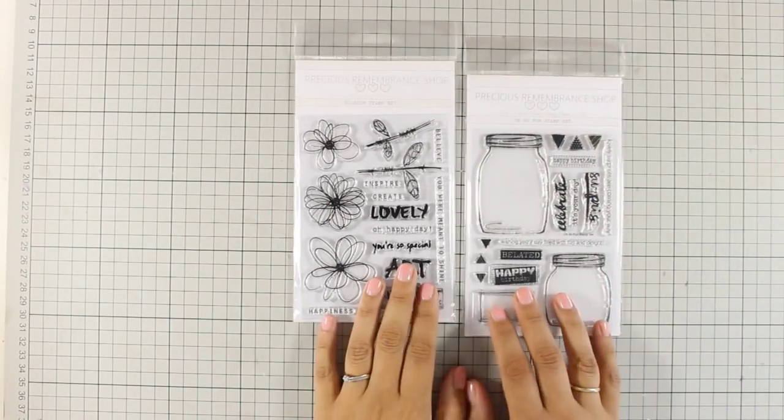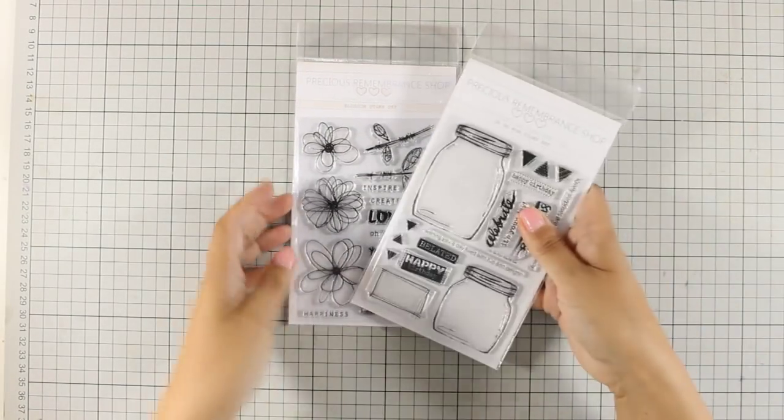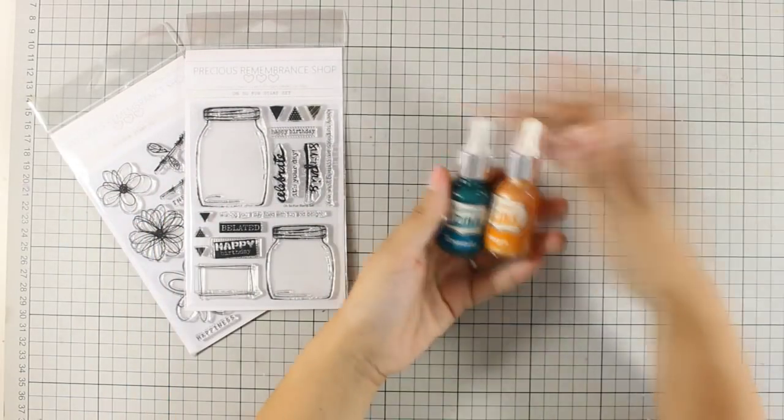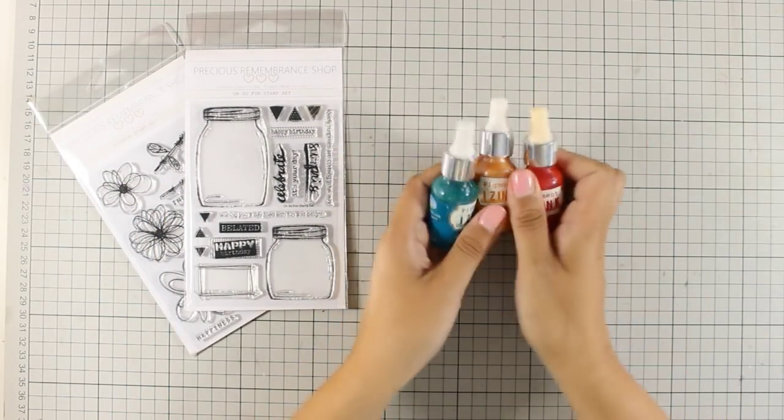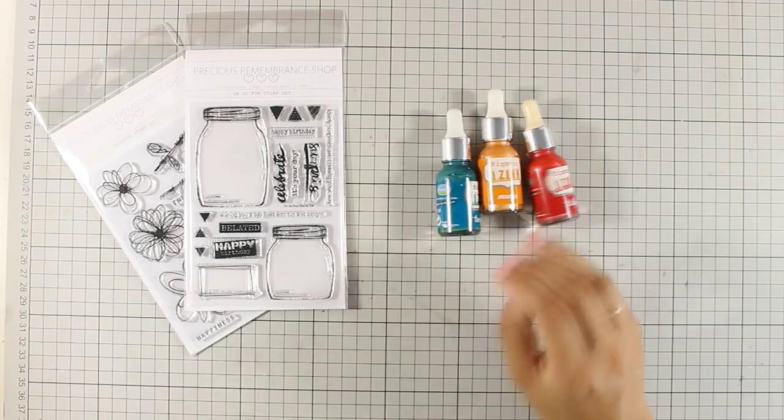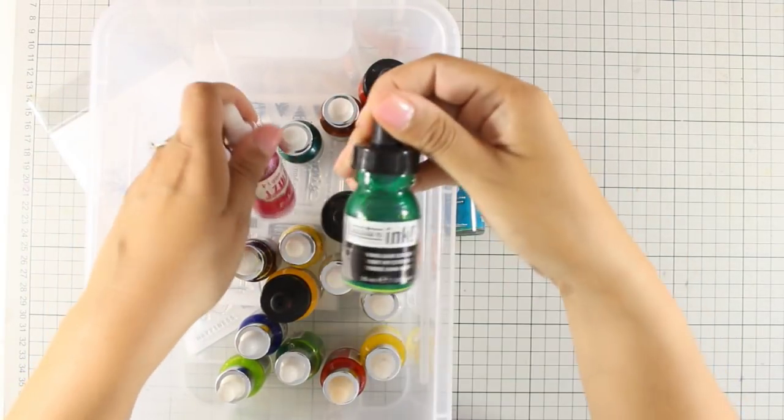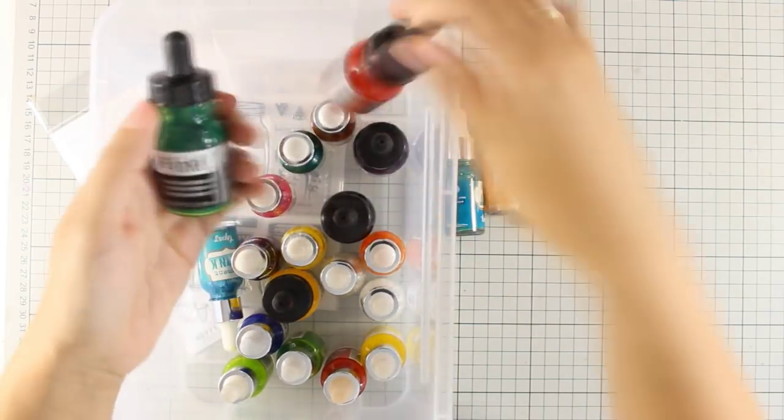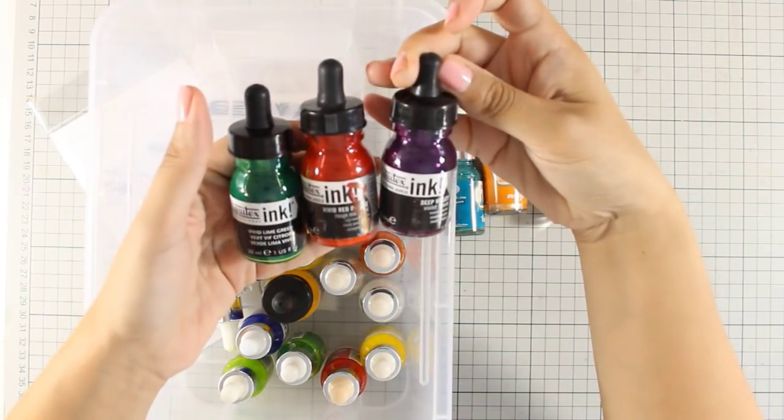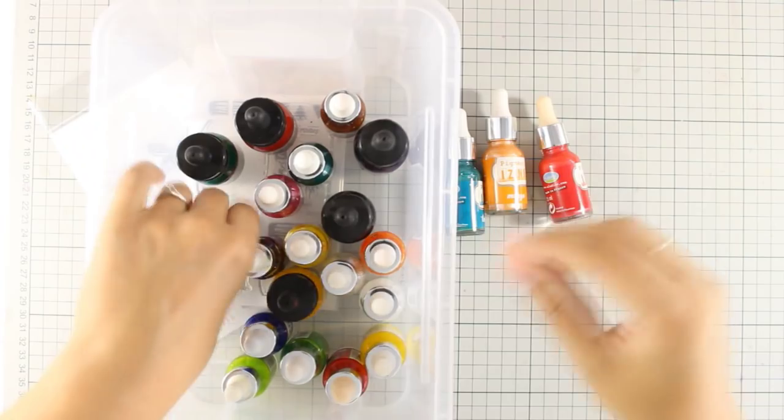Hi everyone, it's Vicky here and today I will be using these two stamp sets by the Precious Remembrance shop to create a fan card. As my coloring medium I will be using these pigment inks, these are called Ising inks and they come in various colors but you can also use Liquitex ink for the technique that I will be showing you today if you have this type of ink.